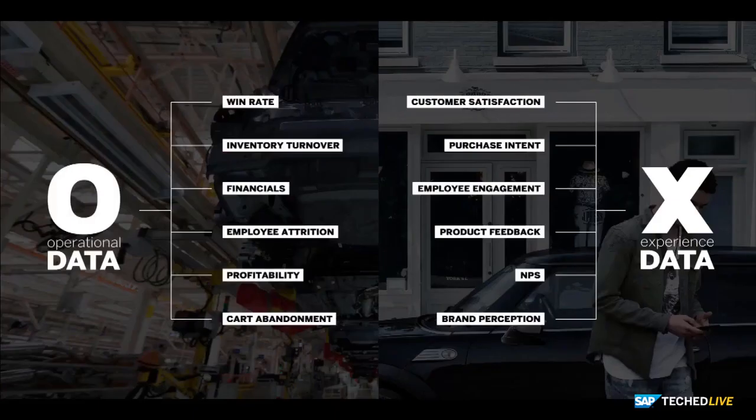O data, as I explained in the keynote, is all the existing operational data that great businesses run on today. The world is awash in O data — companies have vast troves of it. X data, on the other hand — you'd be surprised how many companies actually operate without any X data whatsoever.